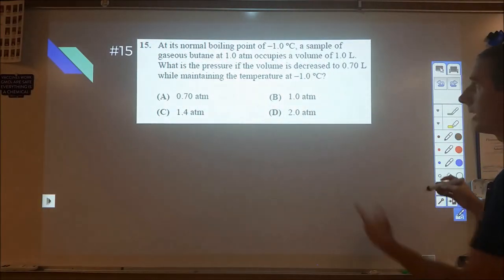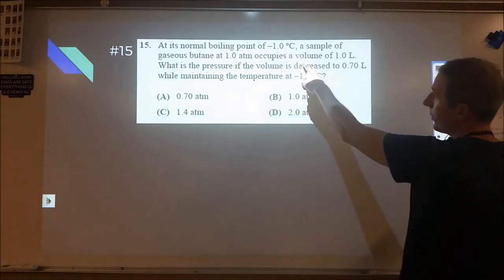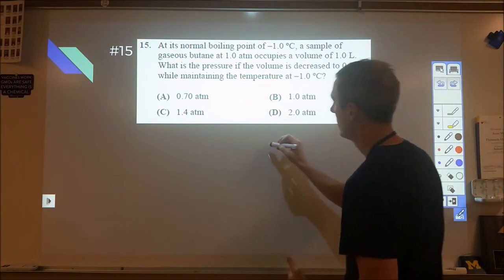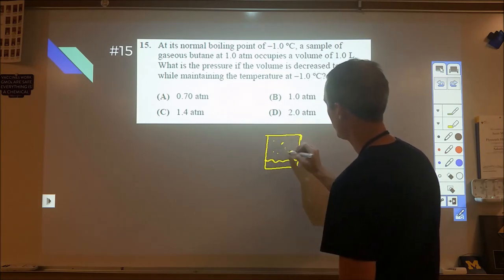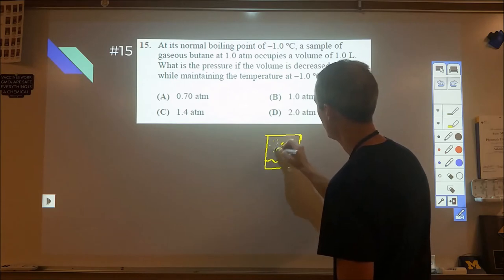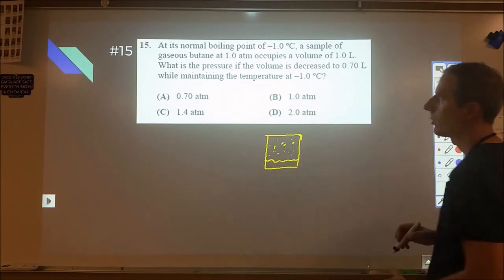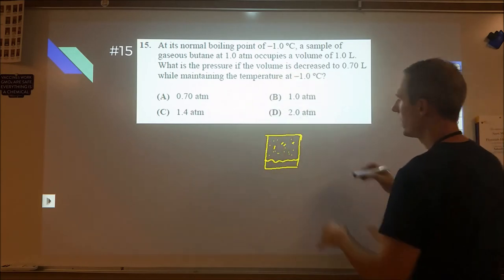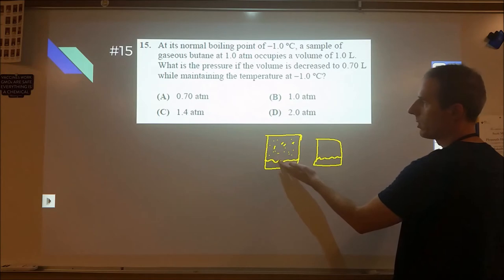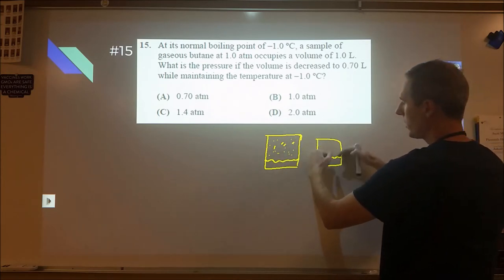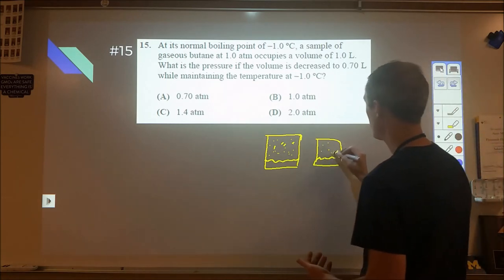This question I ended up getting wrong the first time I took the test, so I got trapped on this. It's at the boiling point, negative one degree. So we have this container and then we compress it. Here's our liquid boiling and there's a bunch of vapor at one atmosphere of pressure. Boiling is where the vapor pressure and the external pressure are equivalent. Then it says we decrease the volume to 0.7 liters. When we do that, more of this vapor is going to turn into a liquid. So we're kind of increasing the rate at which this turns back into this, and then that's going to form a new equilibrium. When it does form the new equilibrium, the pressure will still be the same.